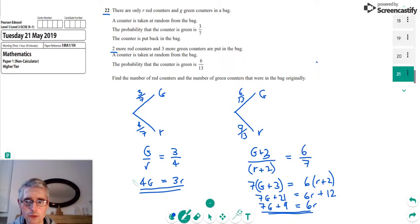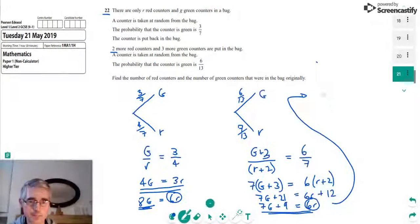If we were to double both sides of this equation, what we'd end up with is 8G equals 6R. So we could take this 6R here and replace it by 8G because we know 6R is equal to 8G. So the 7G plus 9 on the left-hand side of this equation is now going to be equal to 8G.